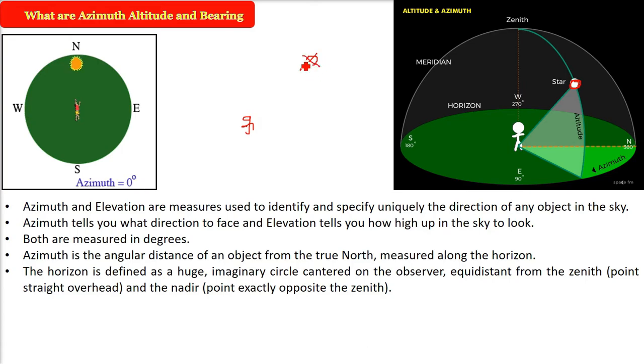Now, you want to find the direction in the sky. You are standing here. Let me assume this is north, this is south, this is east, and this is west. On the horizon plane, you have to move your body to actually see the star or any object. That angle on this circular plane, how much you have moved to face that object, is the azimuth angle.